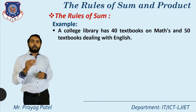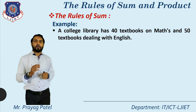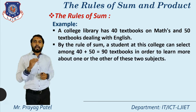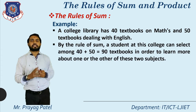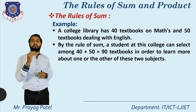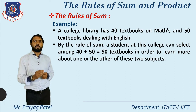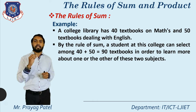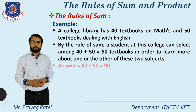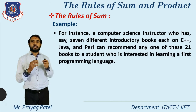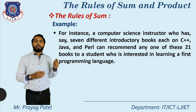The next example related to the rule of sum: a college library has 40 textbooks on maths and 50 textbooks on English. If any student wants to select any one textbook — either a math textbook or an English textbook — how many possibilities are there for selecting only one book? The answer is 40 plus 50 equal to 90 possibilities for the student to select any one book.